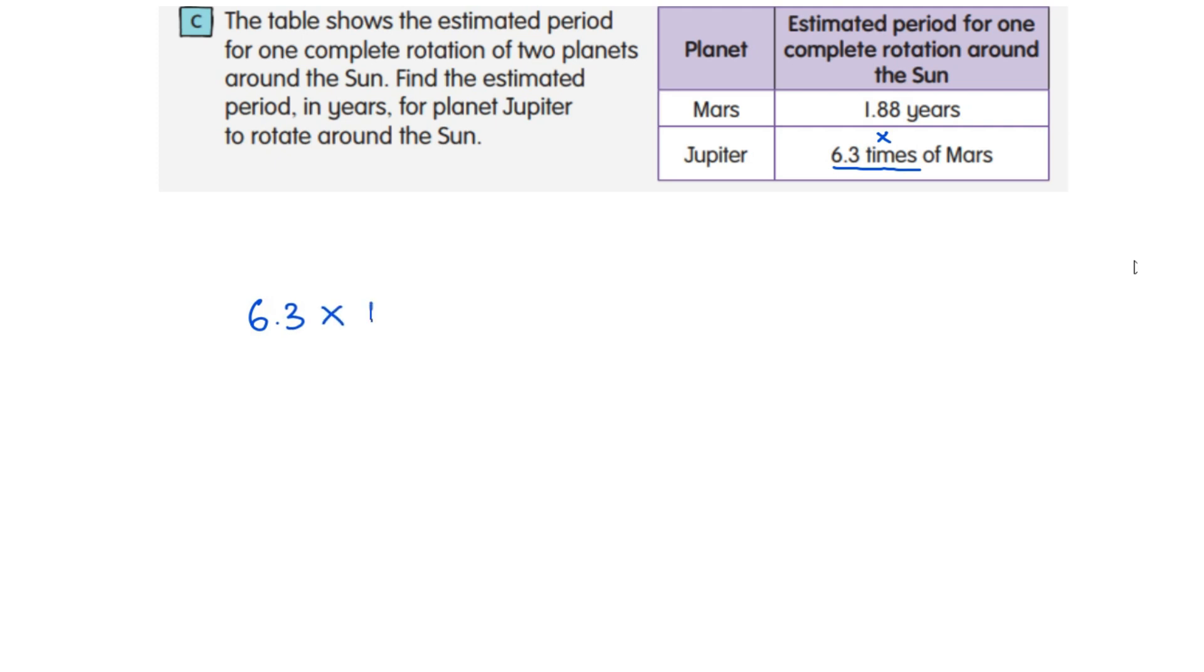Times here you have to multiply. So 6.3 multiplied by 1.88. So 1.88 multiplied by 6.3. 1.88 is two decimal places, so the answer here must be three decimal places. The answer is 11.844 years.